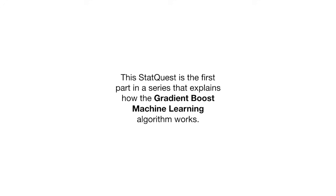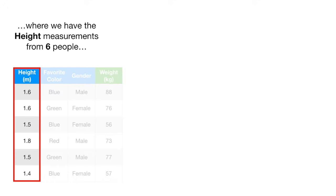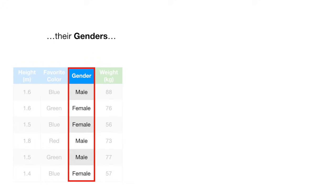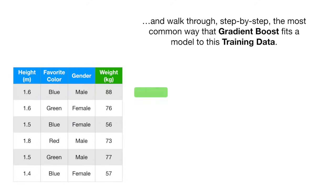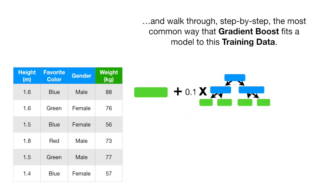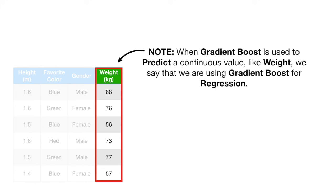This StatQuest is the first part in a series that explains how the Gradient Boost Machine Learning Algorithm works. Specifically, we'll use data where we have height measurements from six people, their favorite colors, their genders, and their weights, and we'll walk through step by step the most common way Gradient Boost fits a model to this training data. Note: when Gradient Boost is used to predict a continuous value like weight, we say that we are using Gradient Boost for regression.